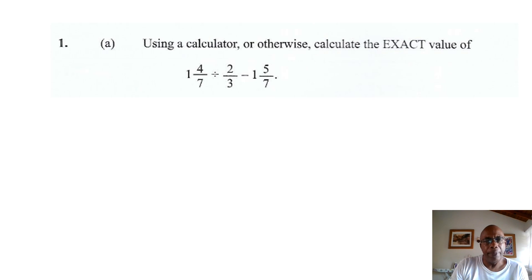So, for example, 1 and 4 sevenths to convert to an improper fraction is 1 times 7 is 7, 7 and 4 is 11 over 7.